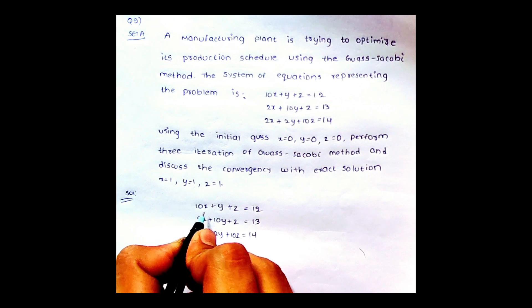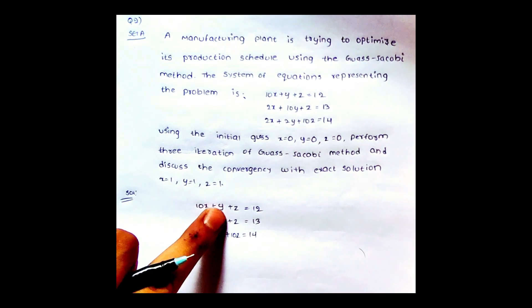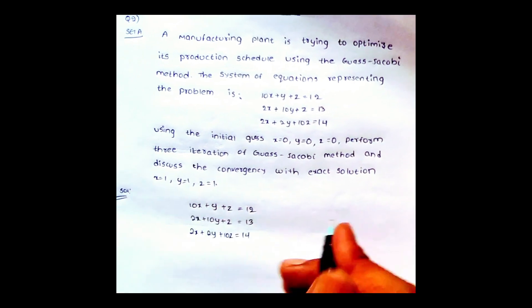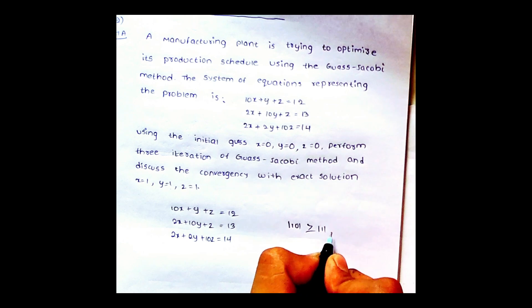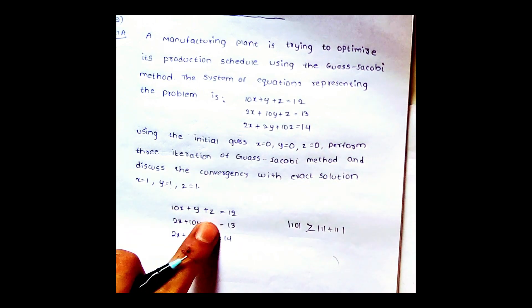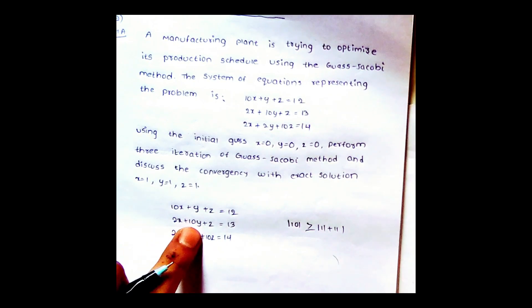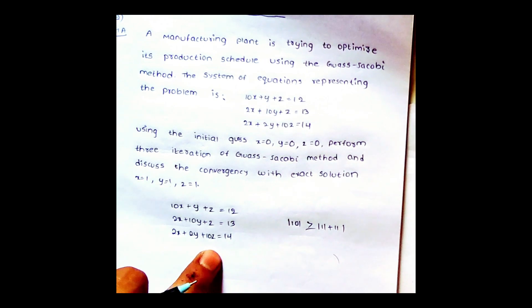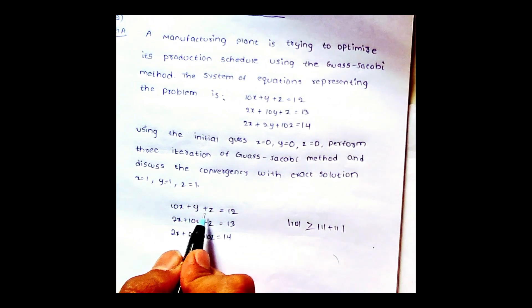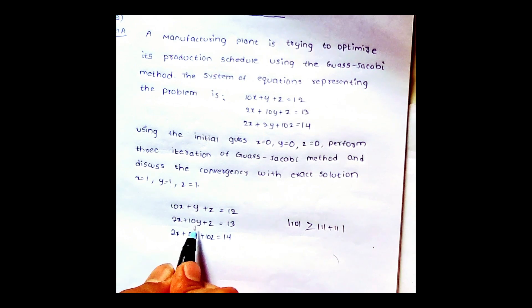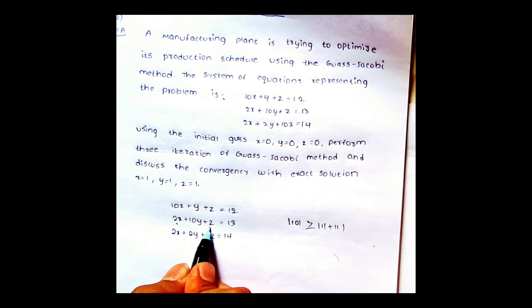First, we have to check whether the diagonal coefficient is dominant. For the first equation, the coefficient of x (which is 10) should be greater than or equal to the sum of the absolute values of the other coefficients: |1| + |1| = 2, and 10 > 2. Similarly, in the second equation, the coefficient of y should be greatest, and in the third, the coefficient of z should be greatest. If this condition is not satisfied, we rearrange the equations.